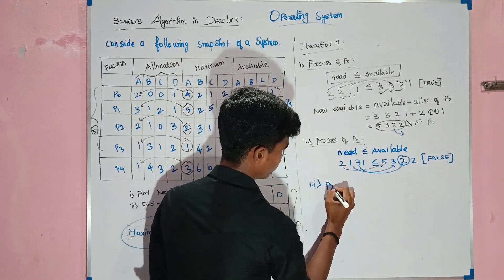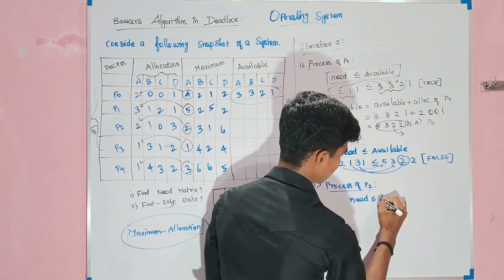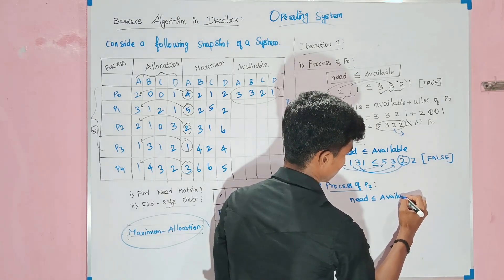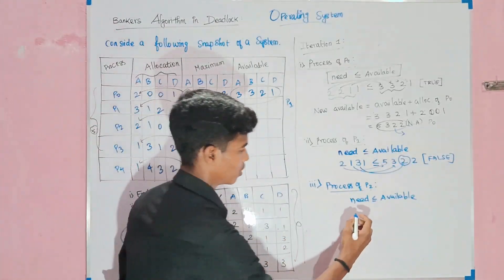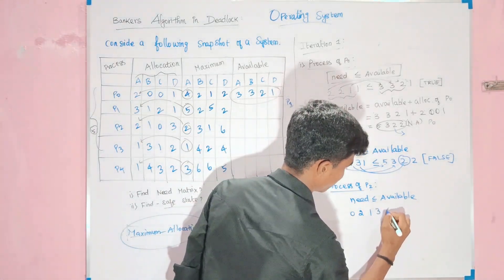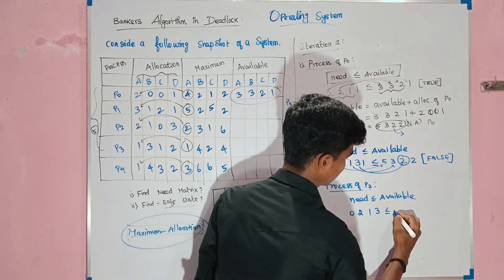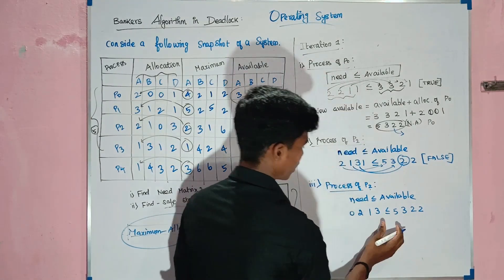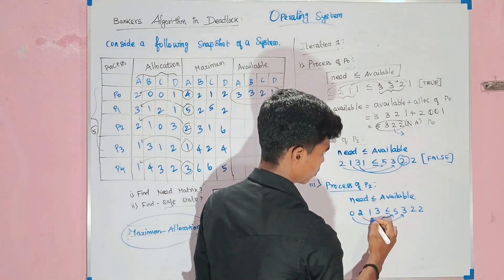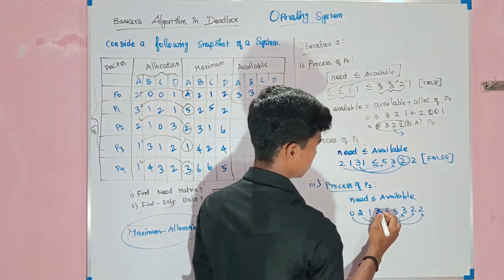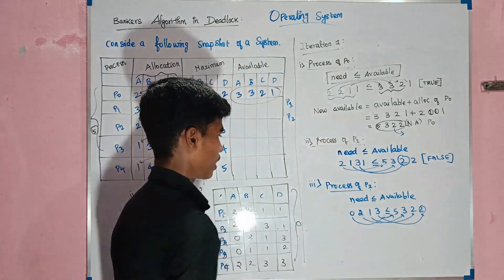Process P2: we check the need of P2 against available. The need is 0, 2, 1, 3. The available is 5, 3, 2, 2. Comparing: 0 ≤ 5, but 3 is not ≤ 2 — the condition is false. P2 is also added to the pending list.